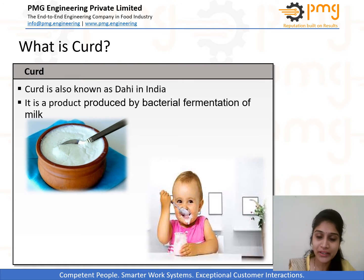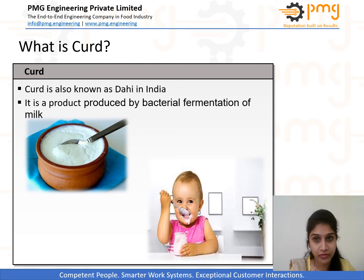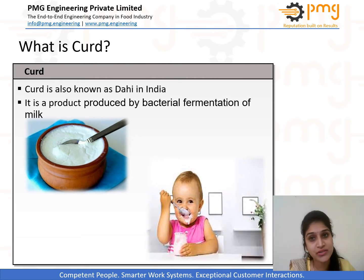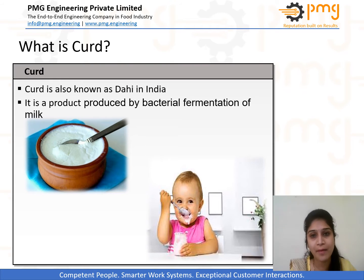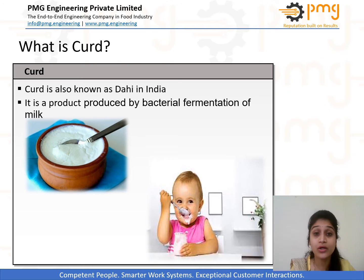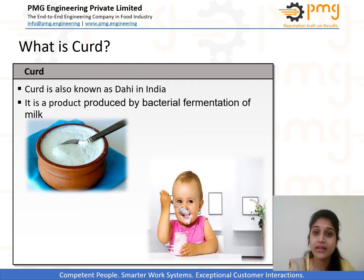Curd is popularly known as dahi in India. According to PFA, dahi is defined as a semi-solid product obtained from pasteurized or boiled milk by souring it using harmless lactic acid cultures. It is recommended that to make a good quality dahi it should contain at least 11 to 13 percent SNF, that is solid not fat, and around 5 percent of fat.